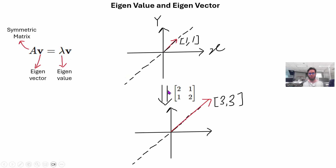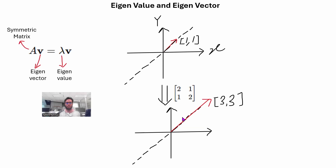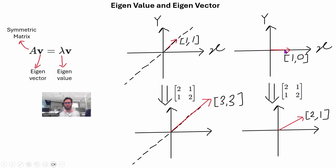This stretching or compression in the same direction only happens in very few cases — and those special vectors are called eigenvectors. So the vector (1,1) is one eigenvector of that matrix, and the eigenvalue is 3. By contrast, if you take a vector (1,0) and multiply by the same matrix, it shifts to a different direction — so it is not an eigenvector. For an N×N symmetric matrix, there can be at most N eigenvector-eigenvalue pairs; some matrices may have fewer, with the remaining eigenvalues being zero.